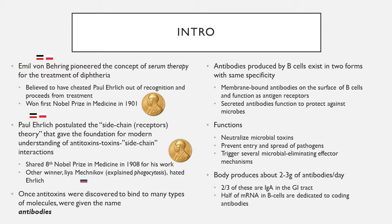In addition to their historical and current importance in treatment of diseases, there are cool chemical reasons why antibodies are important. They're the first type of antigen-binding molecule to be discovered. They recognize the widest ranges of antigenic structures and have the greatest ability to discriminate between different antigens, binding them with the greatest strength — in comparison to all T cell receptors, macrophage receptors, and the like. The body produces around two to three grams of antibodies per day. Two-thirds of these are of the IgA variety, very commonly associated with the GI tract. And half of the mRNA in B cells is dedicated to coding antibodies — these are factory workhorses almost entirely dedicated to that function.